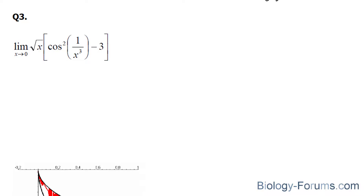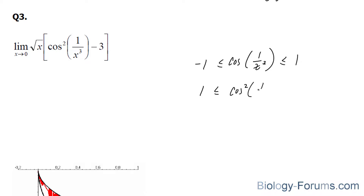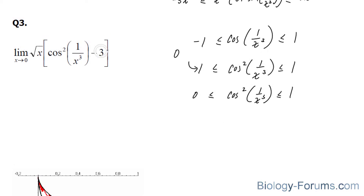Our last question asks us to find the limit of this complicated function. We start with what we know: cosine of 1 over x cubed is between negative 1 and 1. Next, we square everything. Since squaring negative 1 and 1 both give 1, we have cosine squared of 1 over x cubed between 0 and 1 — replacing negative 1 squared with 0, since the function can't be between 1 and 1. We then apply minus 3 to all three components, leading to negative 3, the middle expression minus 3, and 1 minus 3, which equals negative 2.